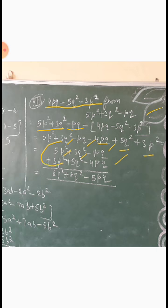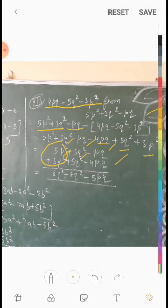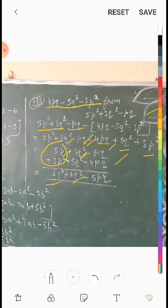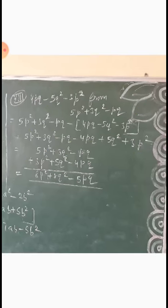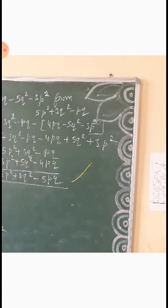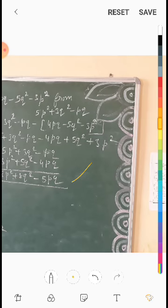उसके बाद देखेंगे: plus 5p² और plus 3p² — यह होगा plus 8p²। coefficient को ही add करना है। 3k² और plus 5k² — यह होगा plus 8k²। उसके बाद minus p³ और minus 4p³ — यह होगा minus 5p³। यह गया हमारा answer.